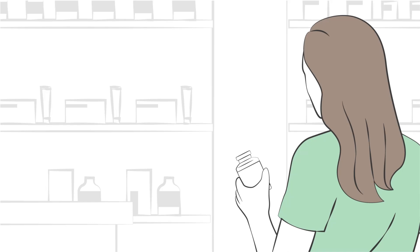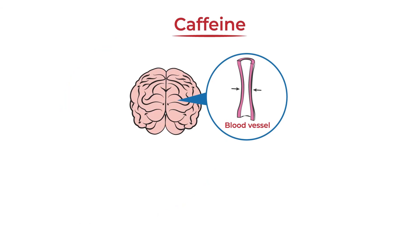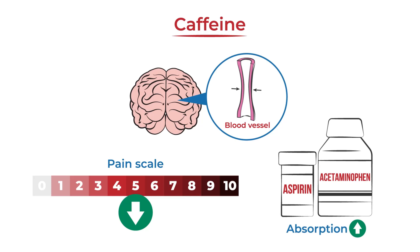Several over-the-counter migraine and headache medications combine aspirin and acetaminophen with caffeine. Caffeine narrows the blood vessels in the brain, acts as a pain reliever, and increases the absorption and effectiveness of acetaminophen and aspirin.